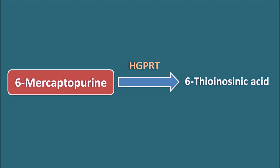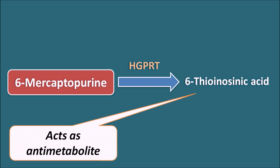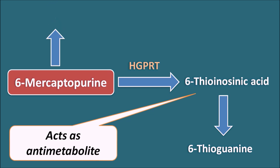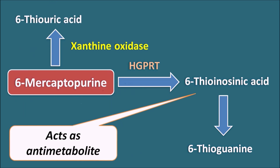6-mercaptopurine is converted into 6-thioinosinic acid by the enzyme HGPRT (hypoxanthine guanine phosphoribosyl transferase). This acts as an antimetabolite and is converted into 6-thioguanine, which replaces guanine. When thioguanine is incorporated into DNA, the DNA becomes non-functional. Additionally, 6-mercaptopurine is metabolized into 6-thiouric acid by xanthine oxidase. When allopurinol is given along with 6-mercaptopurine, allopurinol acts as a competitive inhibitor of xanthine oxidase, thereby inhibiting the metabolism of 6-mercaptopurine. This increases 6-mercaptopurine levels, leading to toxicity — an important drug interaction that may precipitate toxicity.